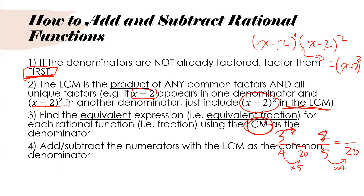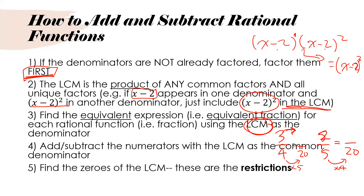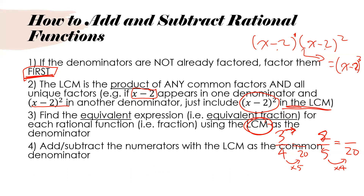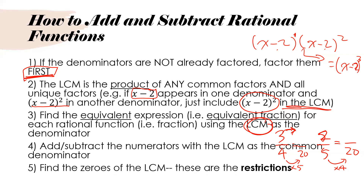You find the equivalent expression, and then your last step — except for the restrictions — is to add the numerators with the lowest common multiple as the common denominator. When you add or subtract, you don't add the denominators. You simply add the numerators once you find the lowest common multiple. Your very last step: find the zeros of the lowest common multiple, because these are your restrictions. You simply check when the denominator is equal to zero.